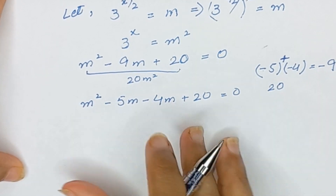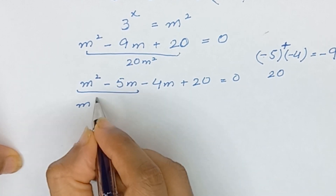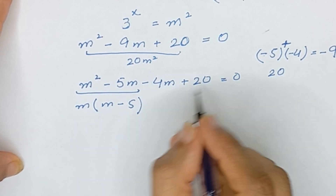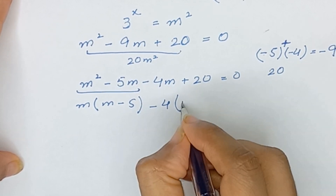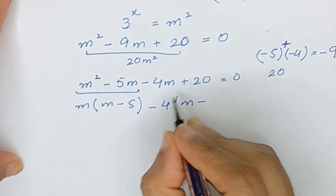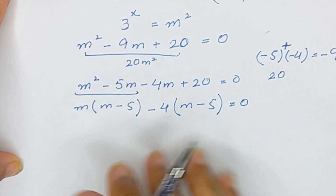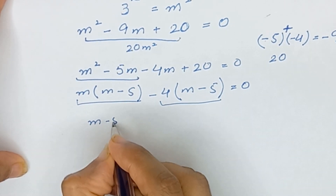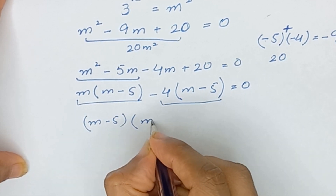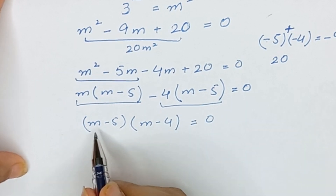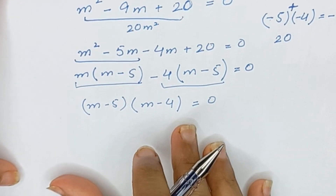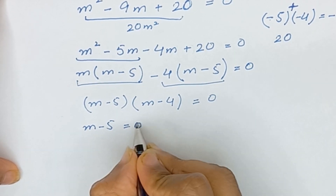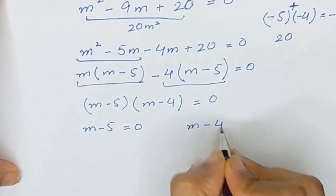From the first two terms, m is common, giving m times (m minus 5). From the last two terms, negative 4 is common, giving negative 4 times (m minus 5). So m minus 5 is common, and the equation becomes (m minus 5)(m minus 4) is equal to 0.